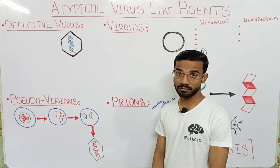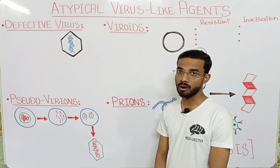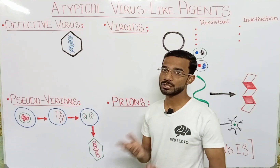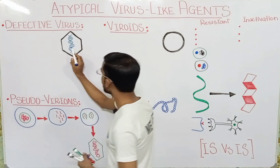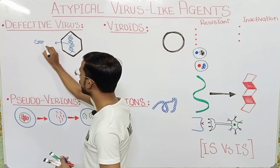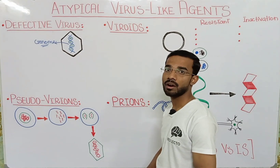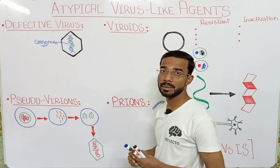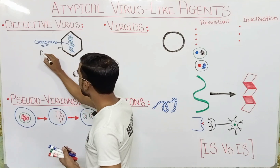First we will discuss the defective virus. As the name indicates, there is a defect in this virus. The defective virus contains two most important things, as a usual virus contains. At the core you will see the genome — the nucleic acid, DNA or RNA. And outside you will see the capsid, which is actually made up of protein.